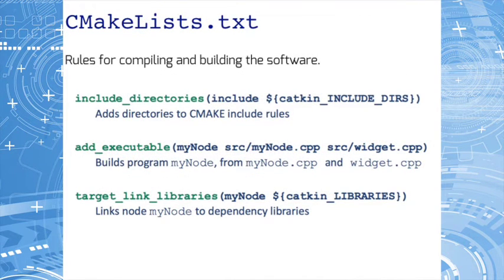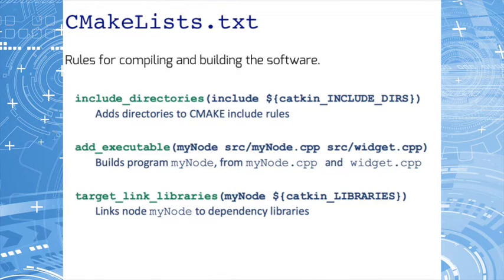The file CMakeList.txt is the input to the CMake build system, which is the system for building software packages. This file describes how to build the code in the package and where to install it to. Don't worry about what the different fields mean for now — we'll get to that later during the hands-on tutorial part. Just remember where to look for these files within the ROS package directory.